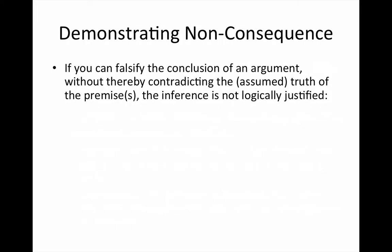How do we understand non-consequence? In other words, how are we supposed to understand when a claim is not the logical consequence of one or more other claims? Well, if you can falsify the conclusion of an argument without thereby contradicting the truth of the premises, the inference is not logically justified. So the way we test for validity — or logical consequence — is by seeing whether we can falsify the conclusion without thereby falsifying one or more of the premises.